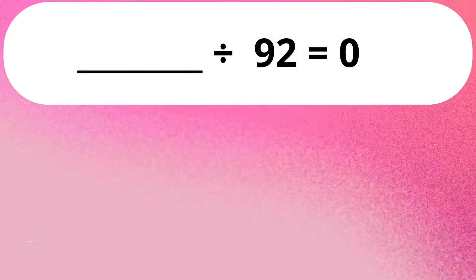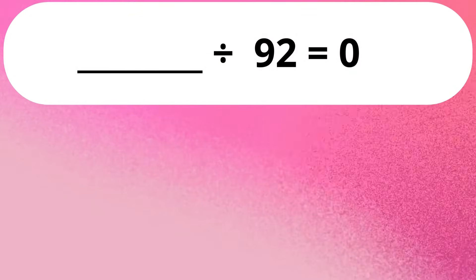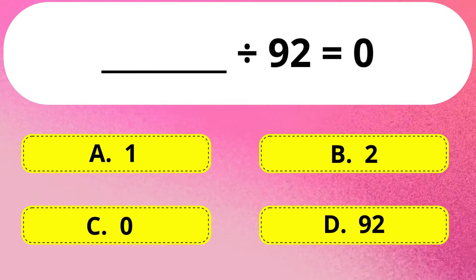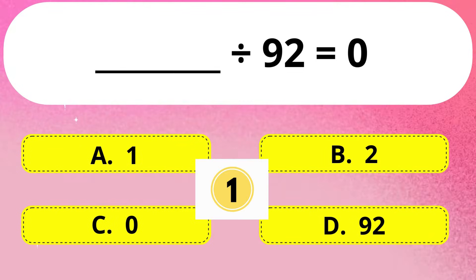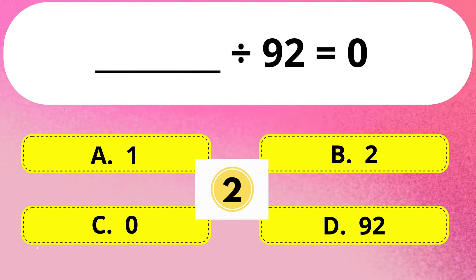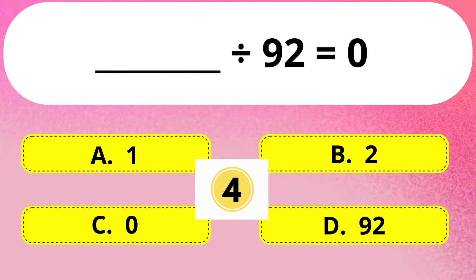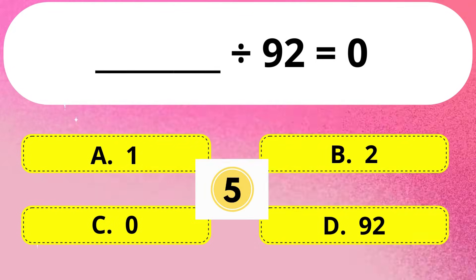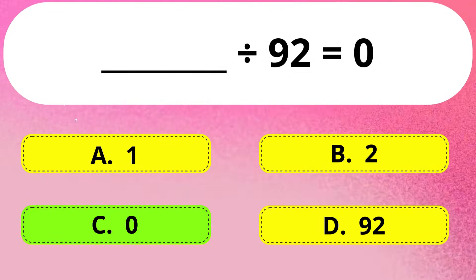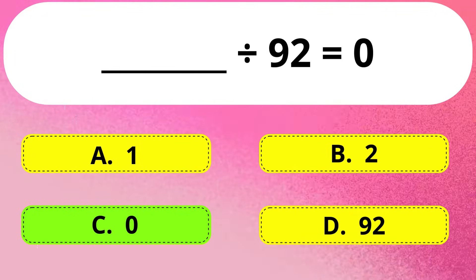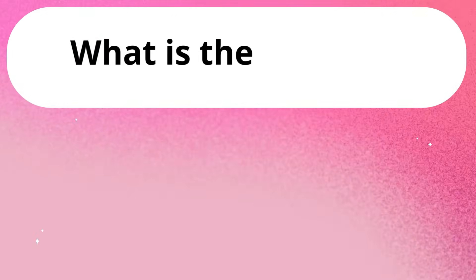Next question. Dash divided by 92 is equal to 0. Answer is Option C: 0.